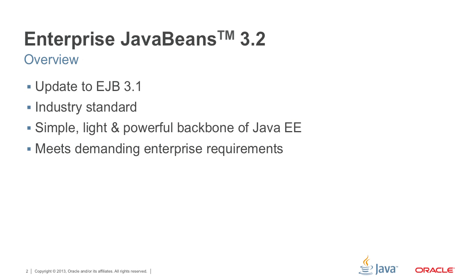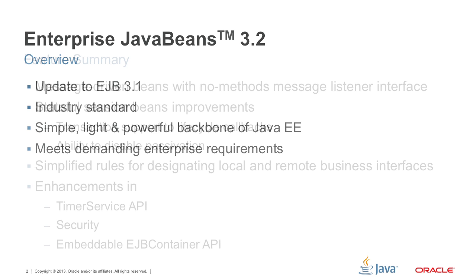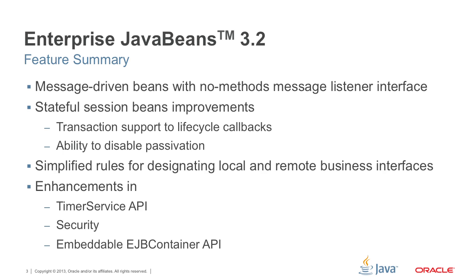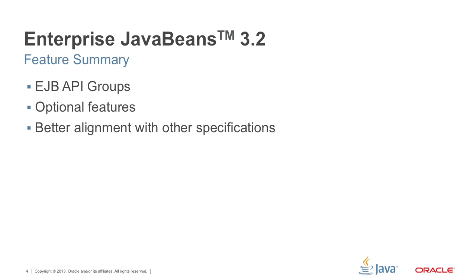This is the next version of the EJB spec; the previous one was 3.1, this one is 3.2. EJBs are now simple, light, and powerful backbone of Java Enterprise with POJO-based beans and simple local and remote views. In this release we introduced message-driven beans with no-methods message listener interface, improved stateful session beans two ways, simplified rules for designating local and remote business interfaces, and enhanced the timer service API, security, and embeddable EJB container API. We introduced EJB API groups and better aligned with other specifications.